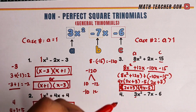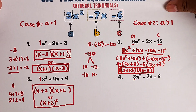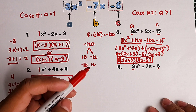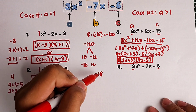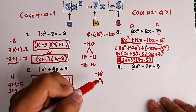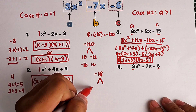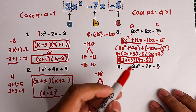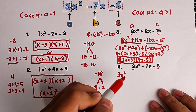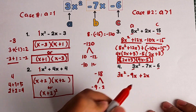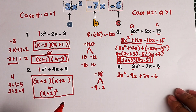Let's move on to example number 4. First, let's multiply a and c. What is 3 times negative 6? The answer is negative 18. Now, what are the factors of negative 18 that give us a sum of negative 7? The factors we need are negative 9 and 2. Negative 9 times 2 is negative 18, and negative 9 plus 2 is negative 7. So we rewrite the expression as 3x squared minus 9x plus 2x minus 6.